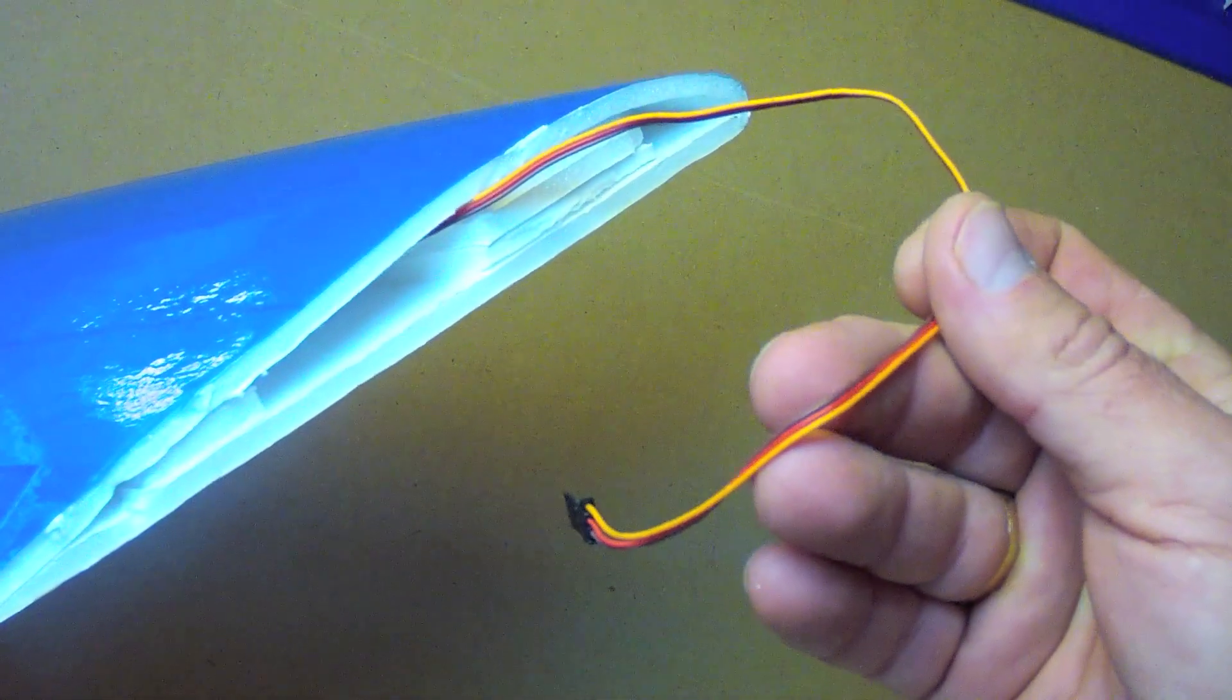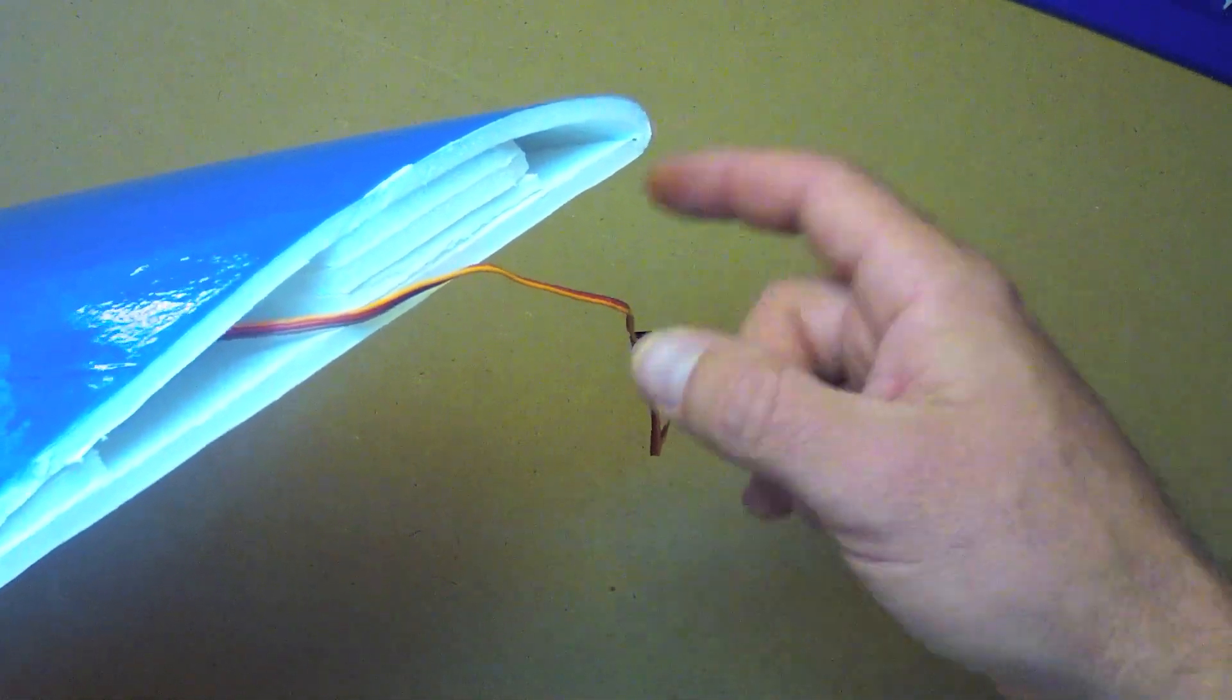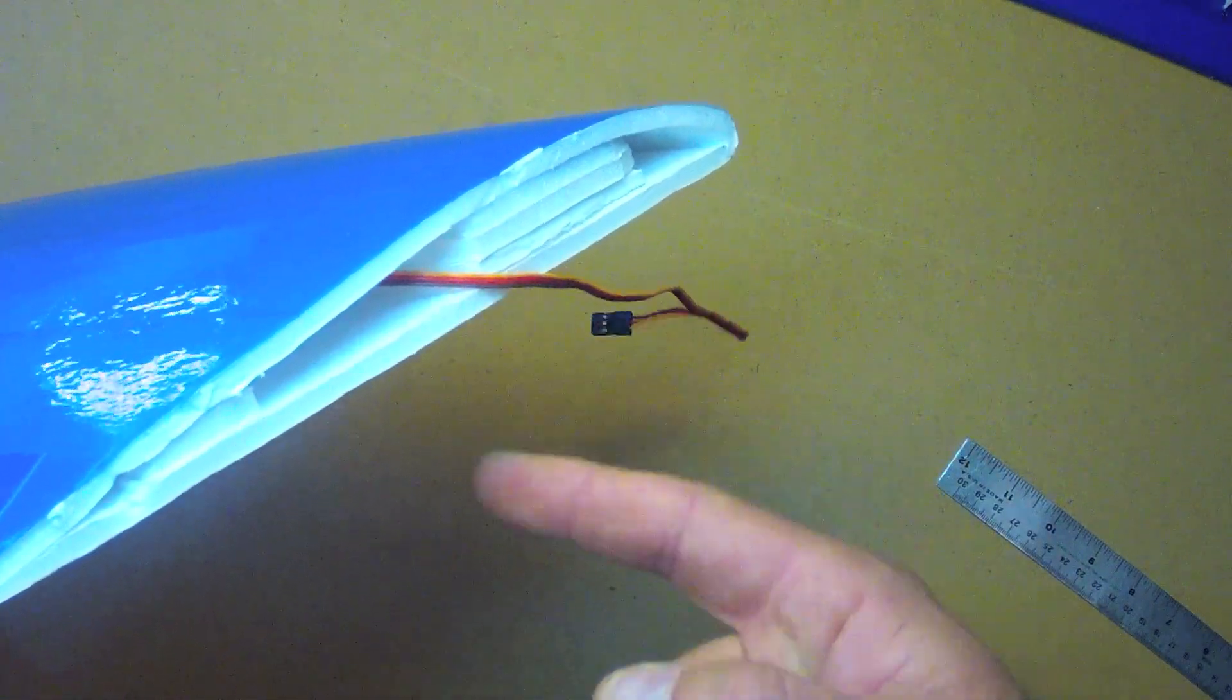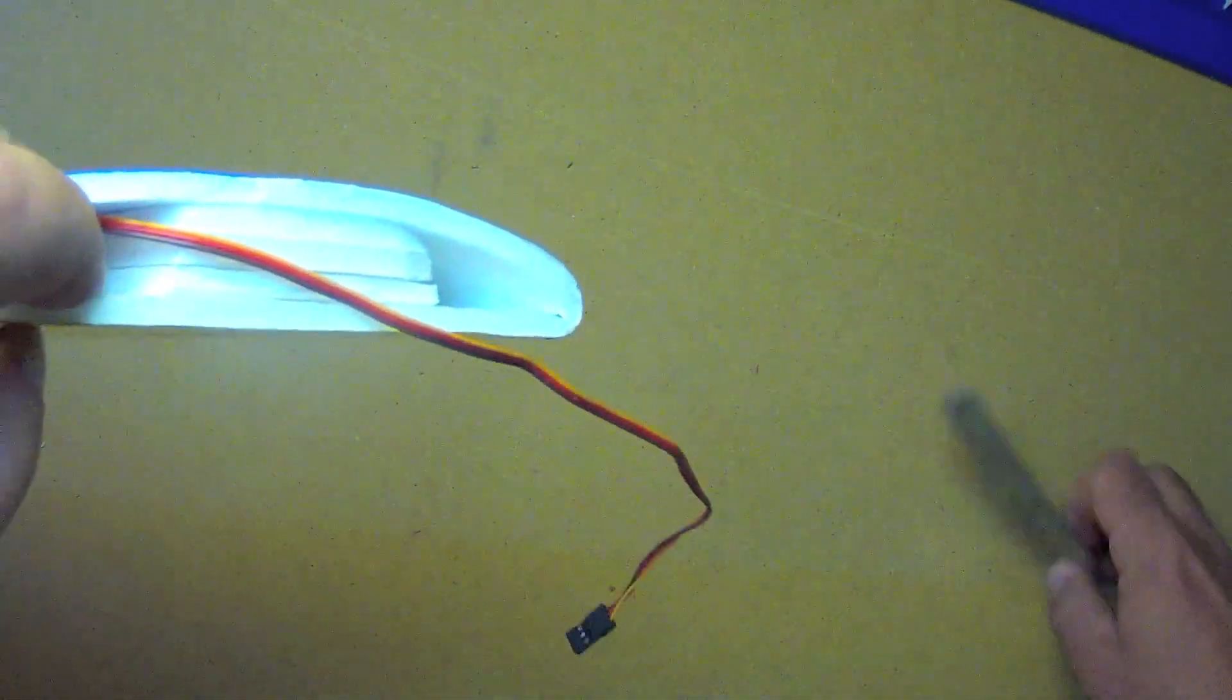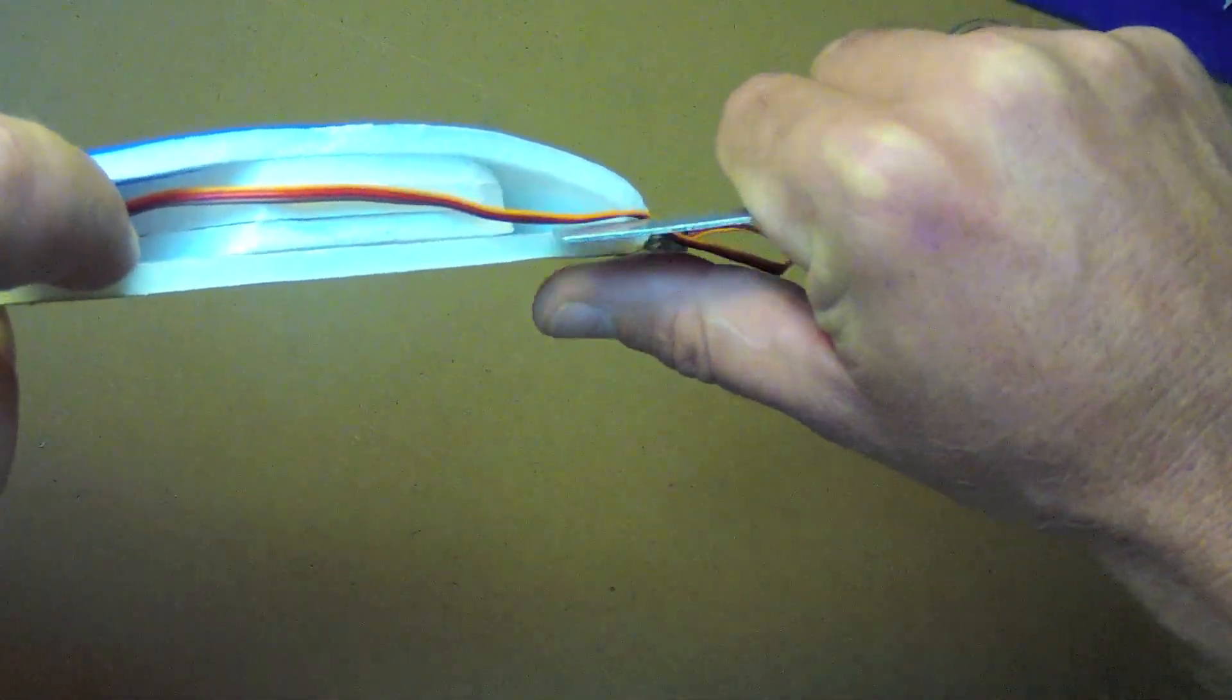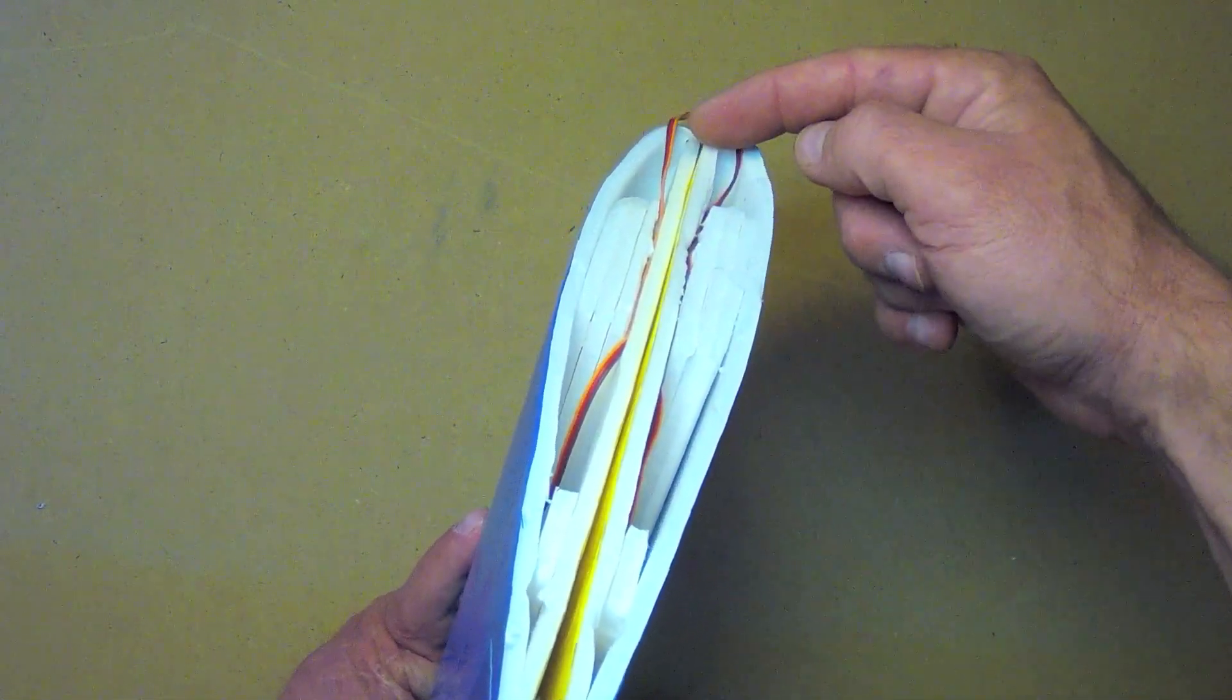Now it's time to route the servo leads. I usually recommend having them exit at the nose of the wing. It'll just put them in the closest proximity to your receiver and electronics, but depending on how you mount your wing, you may wish to have them exit out the bottom or the rear. But if going through the front, it's usually as easy as just sort of burrowing a little space right under this former with a blunt instrument and then just tucking it under there. Here are the servo leads routed under the formers towards the nose of the wing.